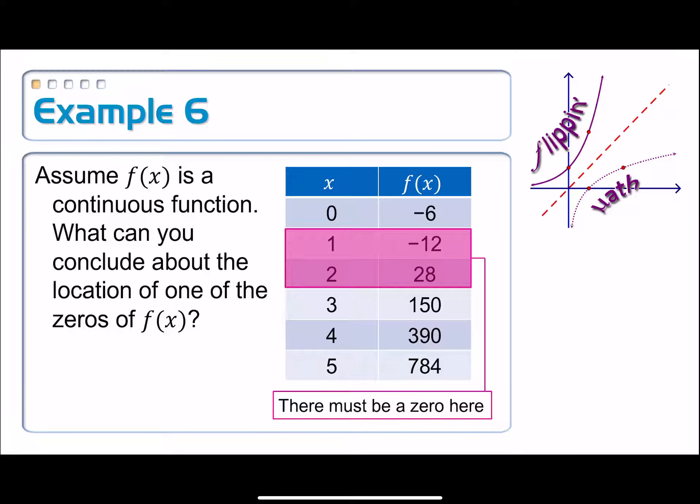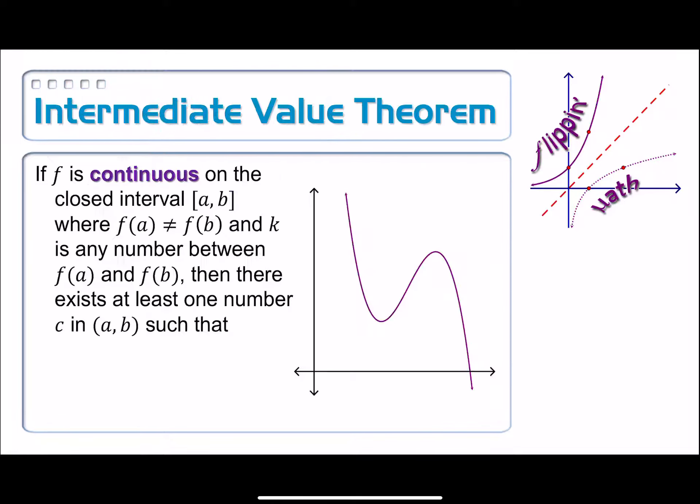So if I look at the x values from 3 to 4, look, we're going from y value of 150 to 390. That means some place in between here, I must have hit, let's say, 300. So in between x equals 3 and 4, there must be a y value of 300 in here. And that's basically the intermediate value theorem, which we sometimes call the IVT.